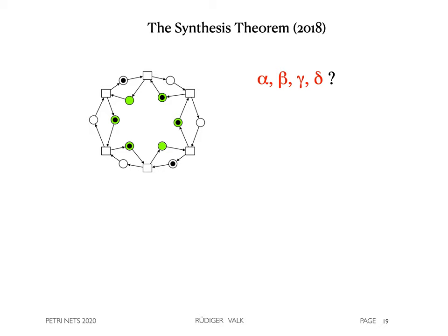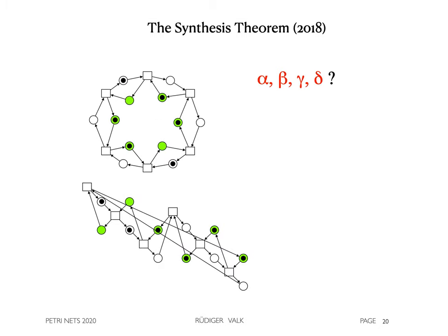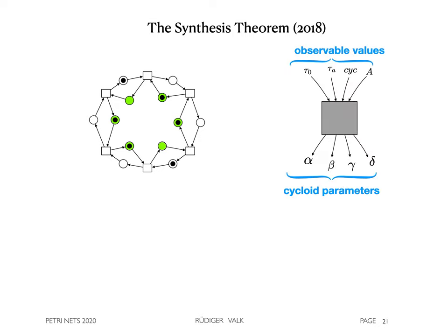Here we have a cycloid, which is not in fundamental diagram form. What are the parameters alpha, beta, gamma and delta? We can try to redesign it, but this is an inefficient solution. The synthesis theorem from 2018 takes as input parameters observable values of the net and returns the cyclic parameters. Tau 0 and tau A are the numbers of enabled and semi-enabled transitions, namely 2 and 4. They immediately give the values beta equals 2 and alpha equals 4, respectively.